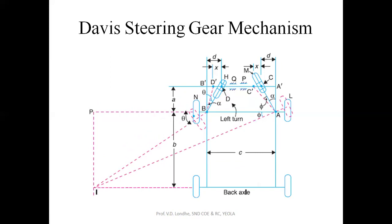In the Davis steering gear mechanism, the front axle is attached with tie rods which have a slider — that is, a slider as well as a slotted lever. The front axle is attached to this upper mechanism so that there are two bearings Q and P. The tie rods will have sliding motion here as well as inside this slotted link.